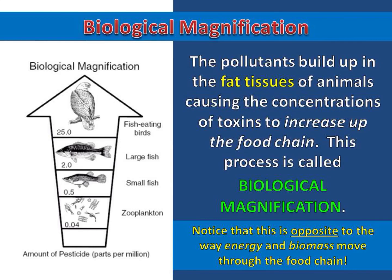The pollutants build up in the fat tissues of animals, causing the concentrations of toxins to increase up the food chain. This process is called biological magnification. Notice that this is opposite to the way energy and biomass move through the food chain.